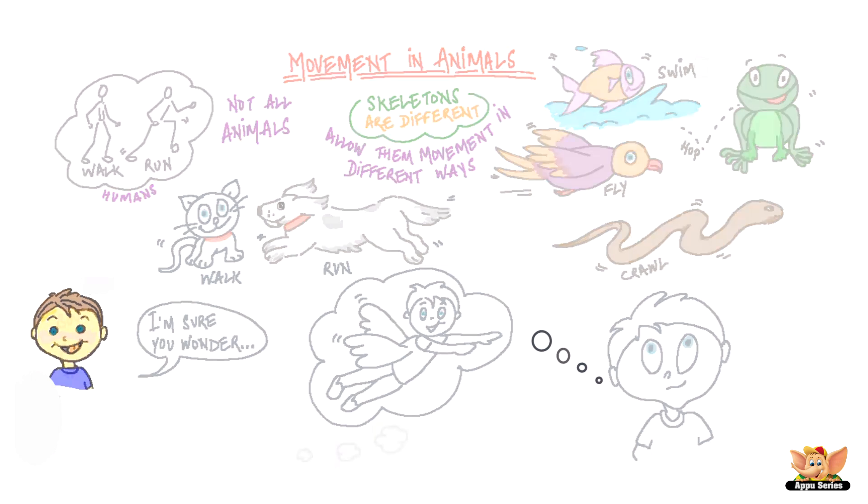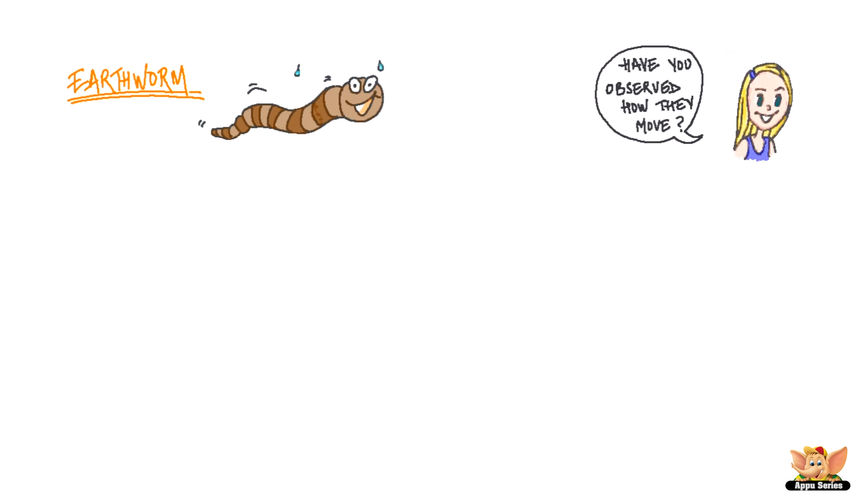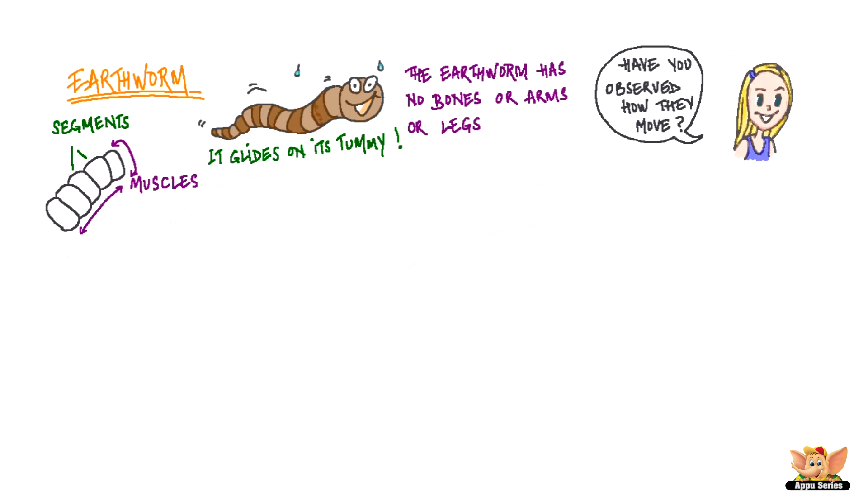We are going to start with the earthworm. I'm sure you have seen earthworms after it rains. Have you observed how they move? The earthworm has no bones or arms or legs, so it slides on its tummy. Its body is made of many rings called segments that are joined together like blocks. It has muscles that go in circles in these segments and other muscles that run along the length of it. These muscles help it to extend and release its body.